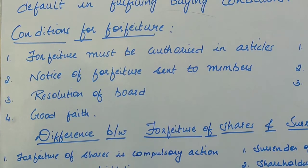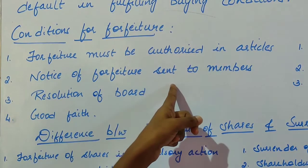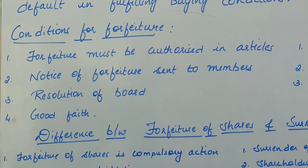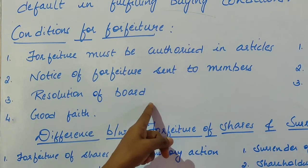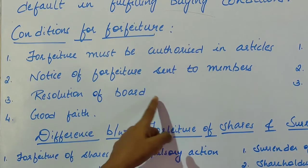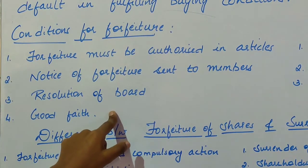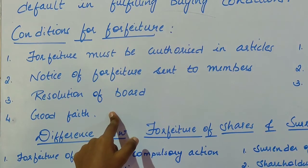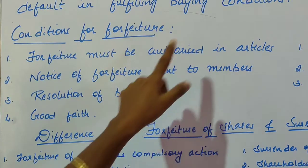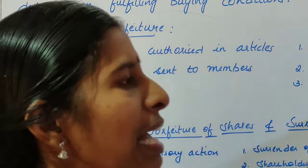The third condition is resolution of the board. Once after sending notice to the members, if the members fail to pay the unpaid amount on shares, then a resolution has to be passed. Only then forfeiture can be actually implemented by the company — without a resolution, forfeiture is generally invalid. The fourth condition is that forfeiture should be carried on by the directors and only for the benefit of the company.